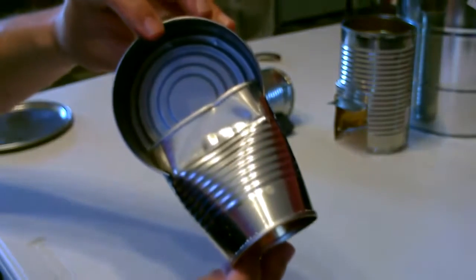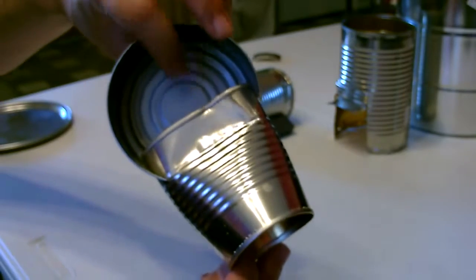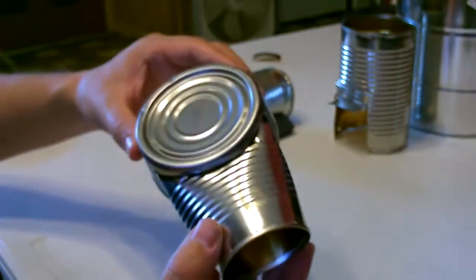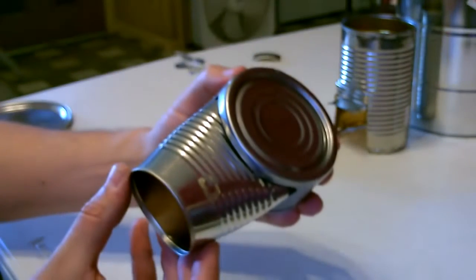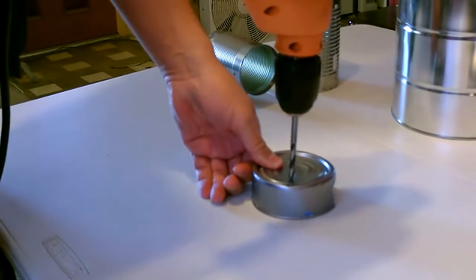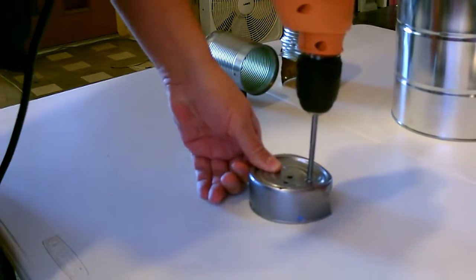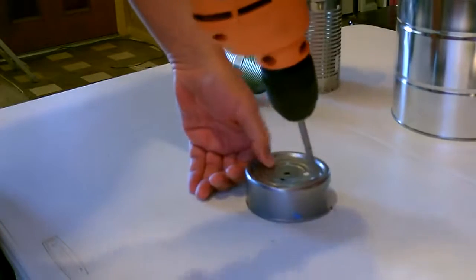All right here's a close-up of how it looks under the tuna can. We're just going to drill a bunch of holes in the bottom of this, that'll be the air inlet. Just kind of scatter them.